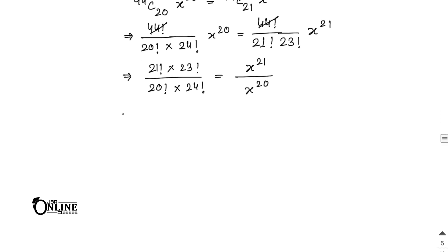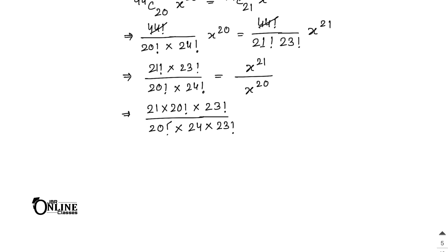Write 21! = 21 × 20! and 24! = 24 × 23!. The 20! and 23! cancel, leaving x = 21/24 = 7/8. So x = 7/8 is the answer.